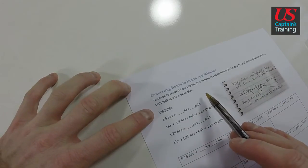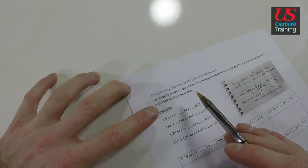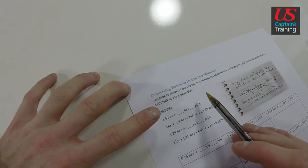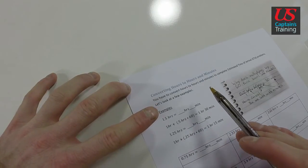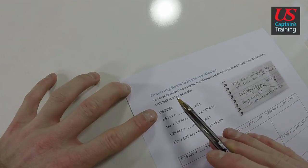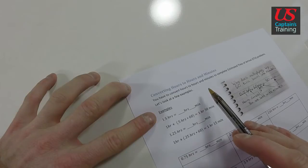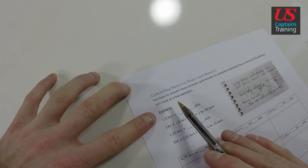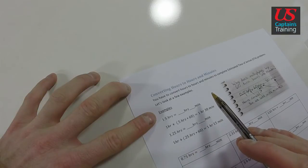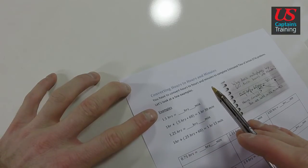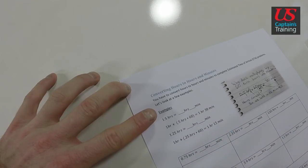Right off the bat, before you get confused at all, I want to tell you: to convert hours to minutes, you multiply by 60. If you're confused at all during this, just remember that. To convert hours to minutes, you multiply by 60. It's that easy. Keep that in mind.